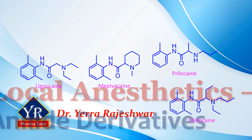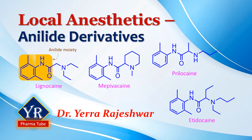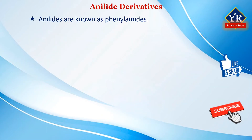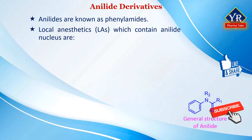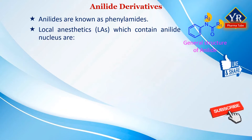In this lesson, we shall learn the anilide derivatives of local anesthetics such as lignocaine, mepivacaine, prilocaine, and etidocaine. Anilides are chemically known as phenylamides, which means they are the amide derivatives of anilines. The general structure of an anilide is shown here where R denotes the possible substituents.